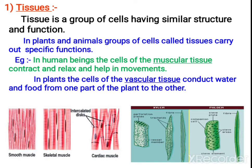First, let us study what is tissue. Tissue is a group of cells having similar structure and function. They should have similar structure and function — then only you call them as tissues. It is a group of cells together having similar structure and function.